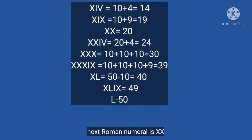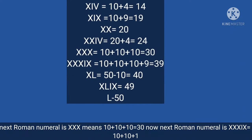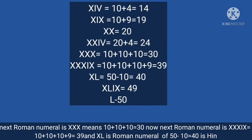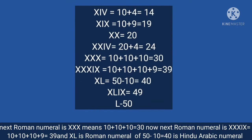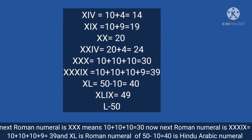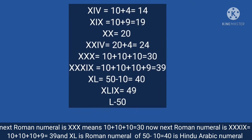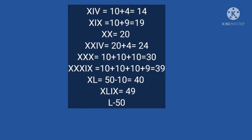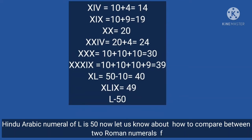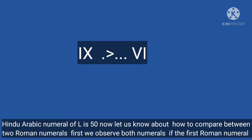Next Roman numeral is XXX, which means 10 plus 10 plus 10 equals 30. Next Roman numeral is XXXIX, which equals 10 plus 10 plus 10 plus 9 equals 39. XL is the Roman numeral for 40 — 50 minus 10 equals 40 in Hindu-Arabic numeral. The Hindu-Arabic numeral of L is 50.